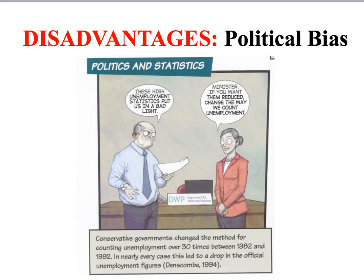Another important reason to treat certain forms of official statistics with caution is that they are government statistics and may therefore be politically biased. For example, famously, the Conservative government of the 1980s and 1990s changed the way in which unemployment was defined and counted over 30 times, and every change but one resulted in a decrease in unemployment numbers.